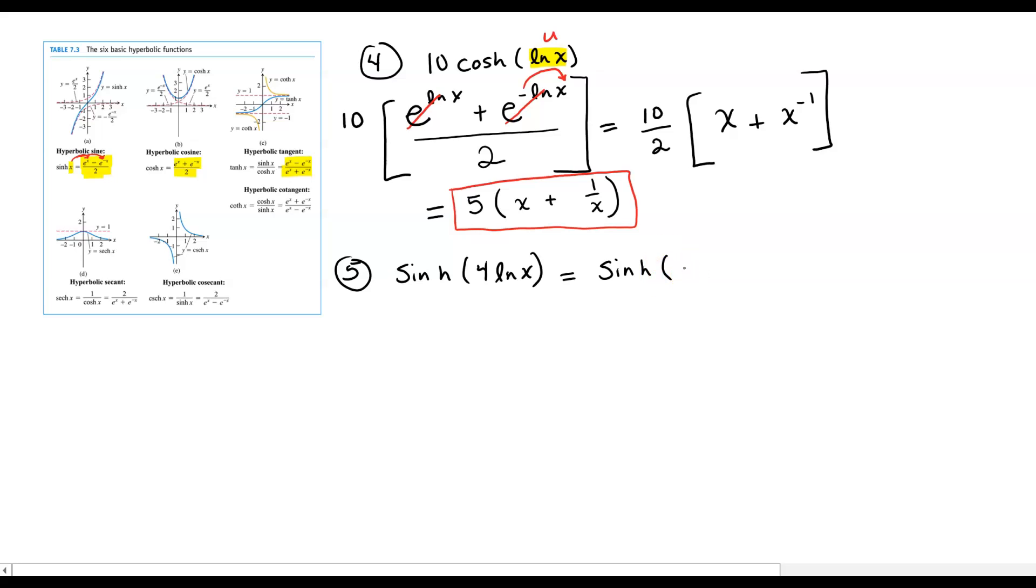And that's going to say this equals the sinh of the natural log of x to the fourth power. So we bring that power up, very similar to what we did for the negative exponent in the last problem. But now that we have our u, which looks like this, we can write it using the exponential expression that was given for sinh. So we're going to have e to the natural log of x to the fourth power, and then minus e to the negative natural log of x to the fourth power.